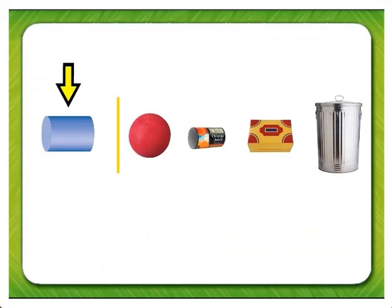Name the first shape in the row. The first shape is a cylinder. Let's describe it. A cylinder has two faces and no vertices or edges.